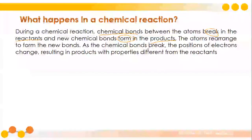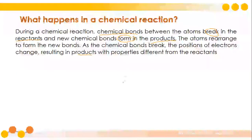The atoms rearrange to form a new bond. As chemical bonds break — this is the reactant side — the position of the electrons change, resulting in products with properties different from the reactant.